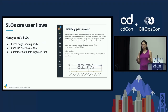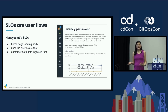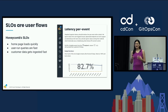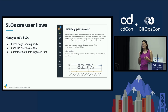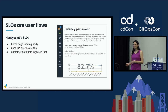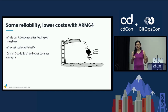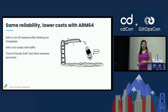We care about lowering costs, but at the same time we cannot break the system for our customers. That means our homepage has to load quickly, people have to get a quick at-a-glance view of what's going on in their system, and user-run queries have to be very fast — faster than taking a sip of your coffee. By adopting ARM64, our hope was to lower costs, improve performance, and make sure we continue to deliver great reliability.